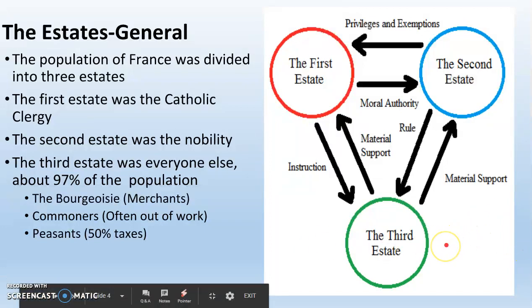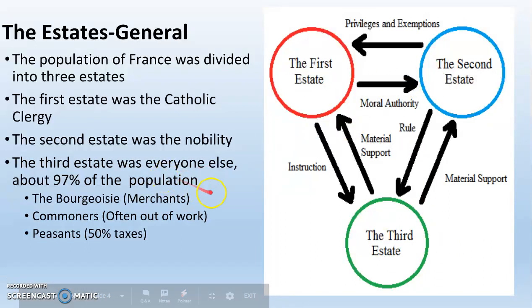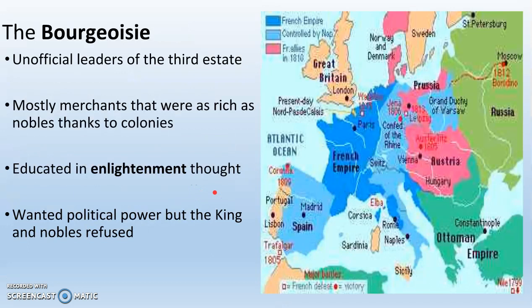The third estate has just as many representatives to this legislative body as do the nobles and the clergy. The bourgeoisie are the unofficial leaders of the third estate. This is mostly merchants that were rich as a result of overseas colonies and overseas trade. These bourgeoisie were highly educated in Enlightenment thought, and they wanted political power, but the king, the nobles, and the Catholic church all refused.